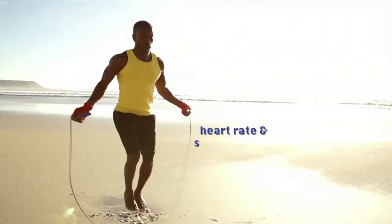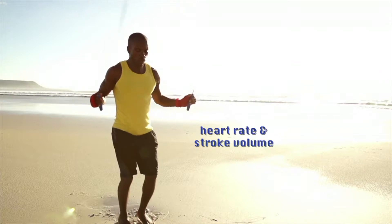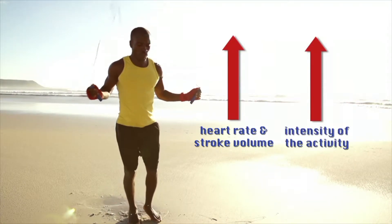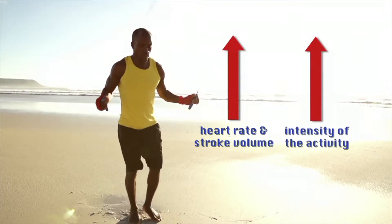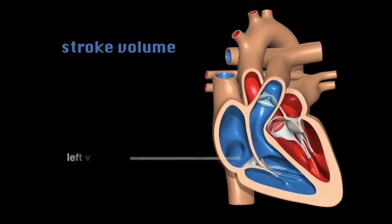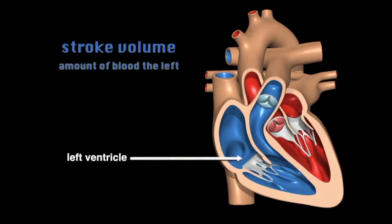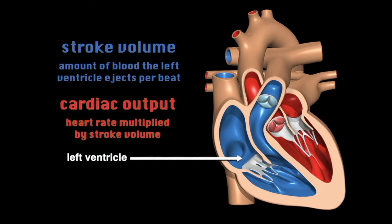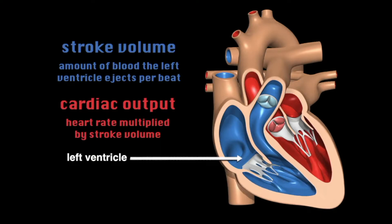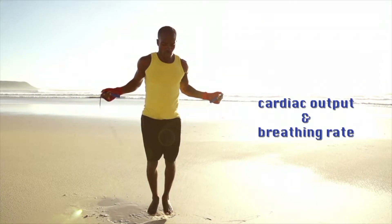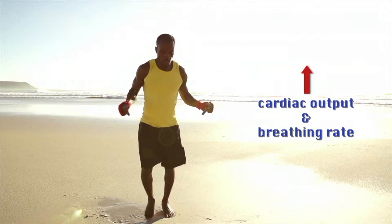As this athlete jumps, his heart rate and stroke volume increase in direct proportion to the intensity of the activity. Stroke volume is the amount of blood the left ventricle ejects per beat. The jumper's cardiac output is his heart rate multiplied by stroke volume. As he continues to jump, his cardiac output and breathing rate increase.